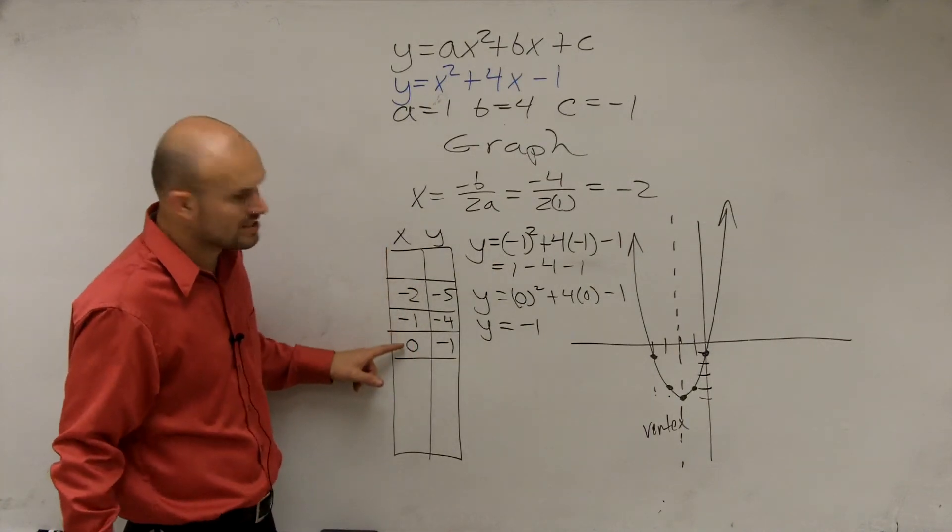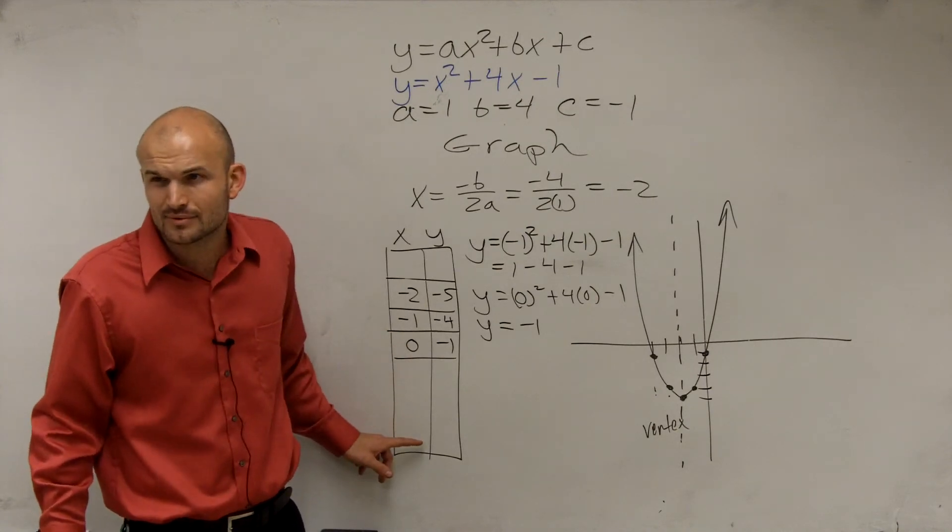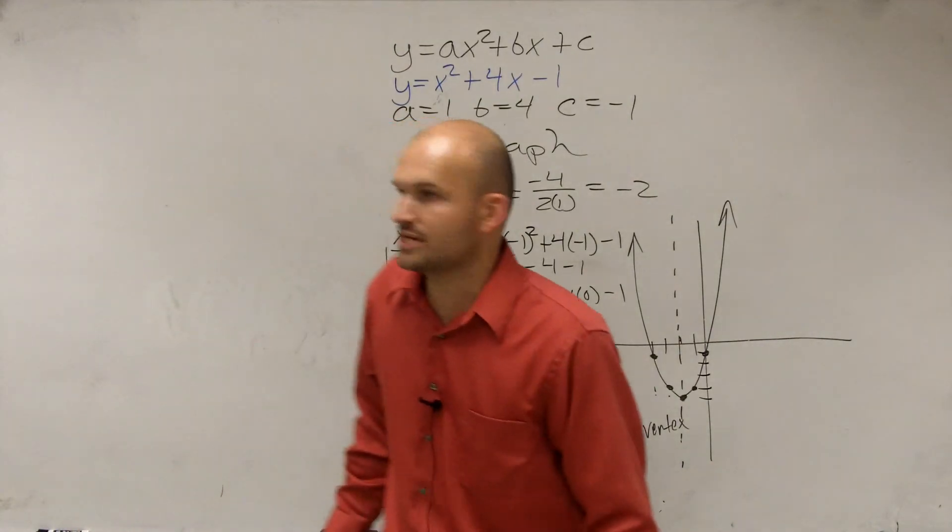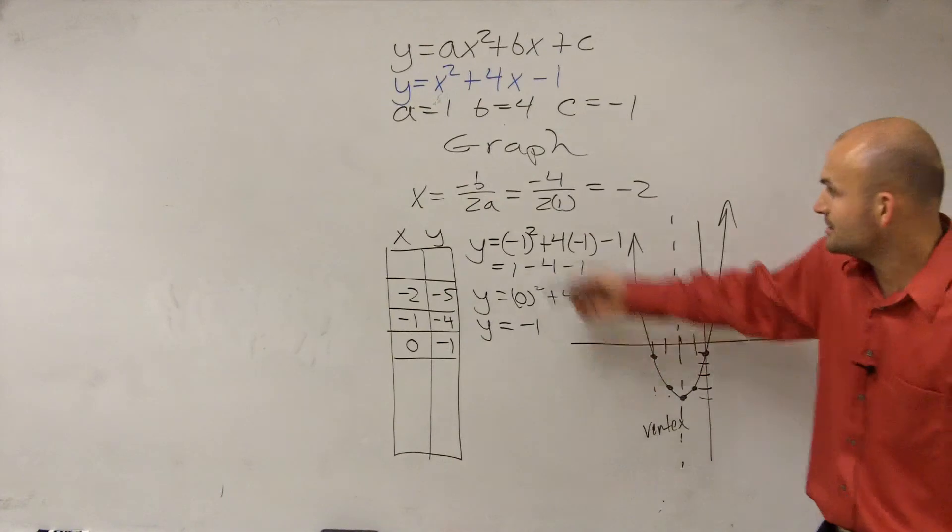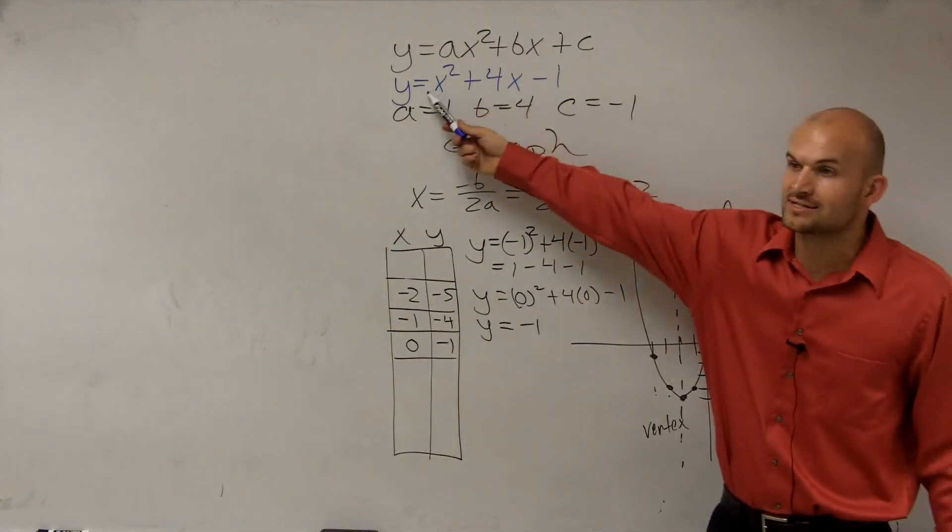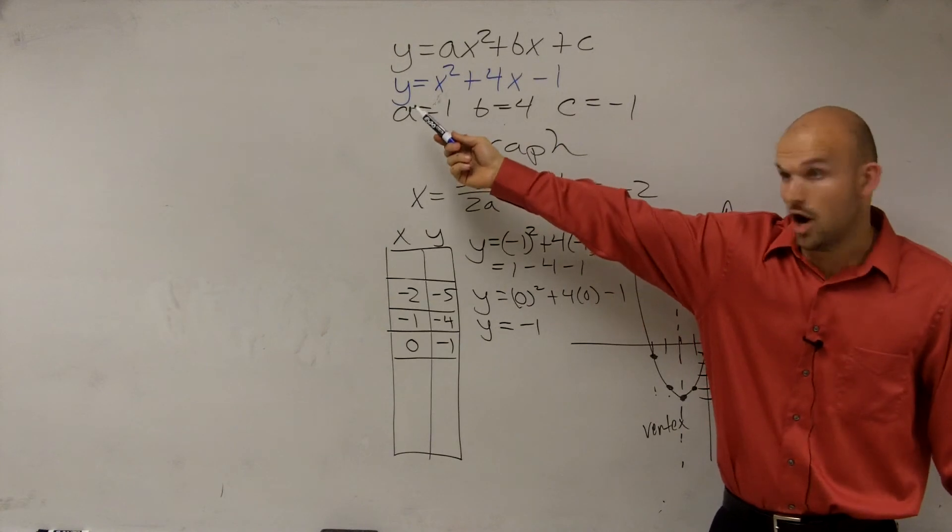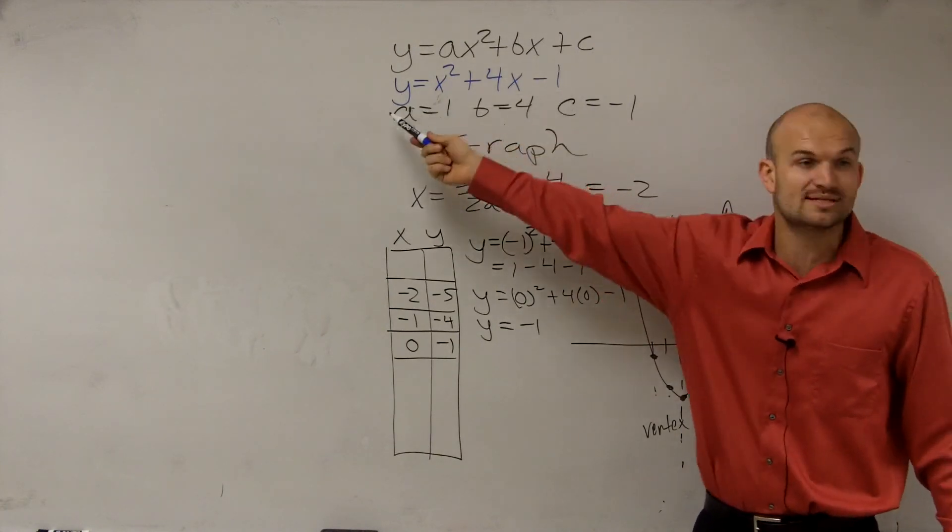No matter whatever x value I plug in, am I always going to get a y value? Is there a number you can plug in for x that you won't get a y value? No. No, there's infinite many, right? It doesn't matter what number you want to plug in for x. No matter what number you plug for x, you're going to get an answer, right? Always. You're always going to get an answer. Whatever number you plug in for x, you're always going to get an answer.